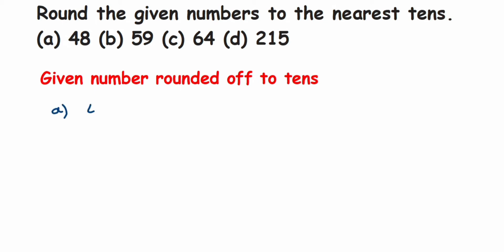Whenever they ask us to round off to nearest tens, we know the first place is the ones place and the next is the tens place. We have to check the number in the ones place — the previous digit. If the number is 5 or greater than 5, then you add 1 to the digit in the tens place. If the ones digit is less than 5 — that is 1, 2, 3, or 4 — you don't add anything; you just make that digit 0.